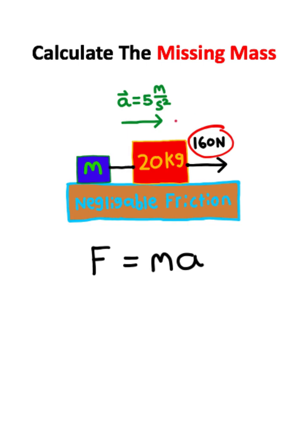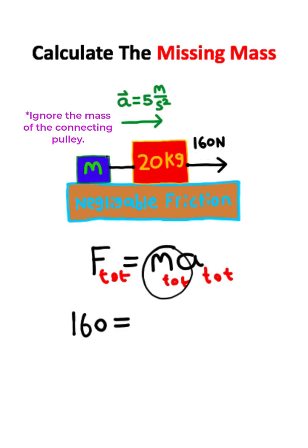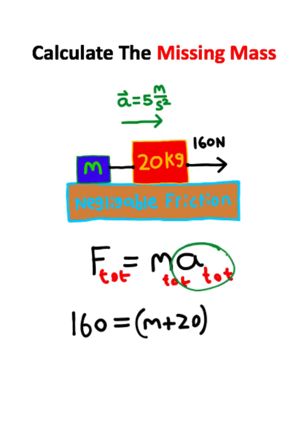Now the force we're given is the total force driving the system. So we'll plug in the total force, which is 160 Newtons. The total mass is basically just the sum of the unknown mass and the 20 kilogram mass. And the total acceleration is given to us as 5 meters per second squared.